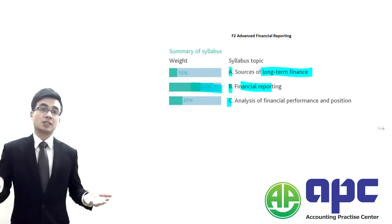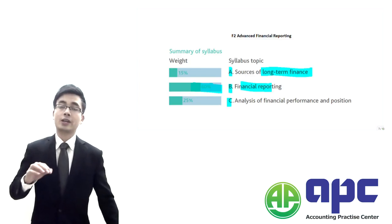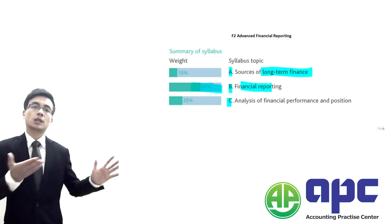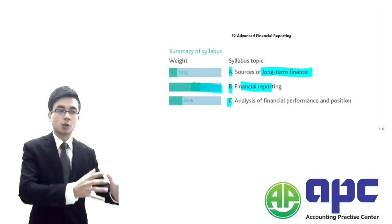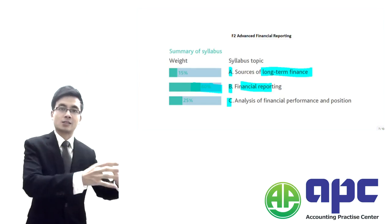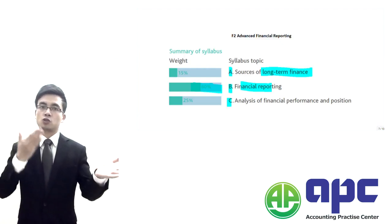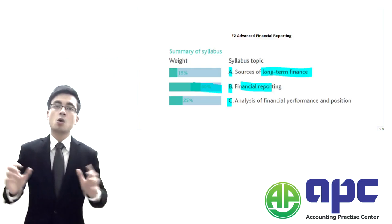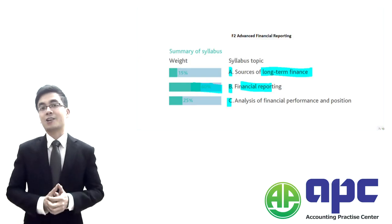In the past, in CIMA F1, we looked at simple consolidated financial statements, but now we're looking at more complicated issues related to group accounts. Not only are we going to focus on the previous level of study — where one company buys another — but right now we've got one company buying multiple entities. During the year, the company may have disposed of shares, so changes in ownership will be tested in Section B. Some of the more complicated accounting standards will be tested in Section B as well.